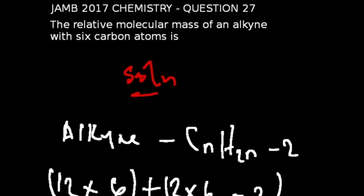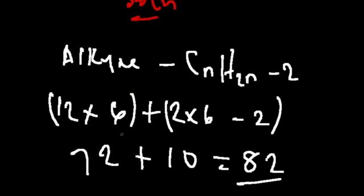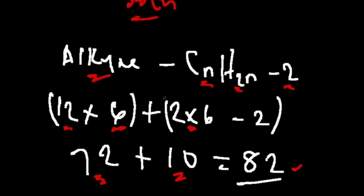Question 27, JAM 2017 chemistry exams: the relative molecular mass of an alkyne with six carbon atoms. Alkynes have the formula CₙH₂ₙ₋₂. So with n=6: (12 × 6) + (2 × 6 − 2) = 72 + (2 × 4) = 72 + 10 = 82. Therefore the relative molecular mass of the alkyne with six carbon atoms is 82.